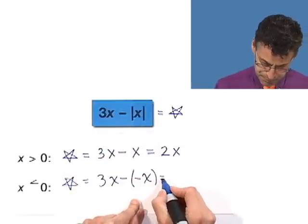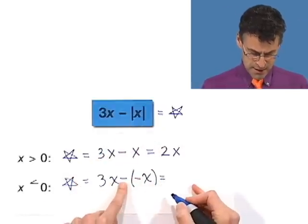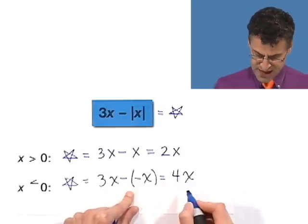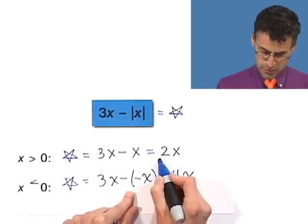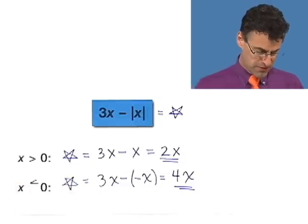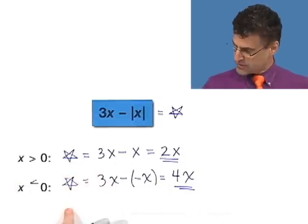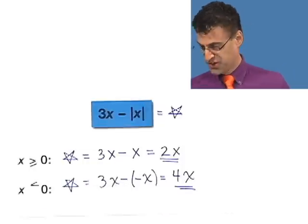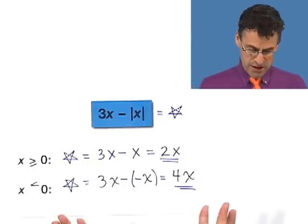Now we have to simplify: 3x minus negative x is the same thing as 3x plus x, which is 4x. So the answer is 4x when x is less than zero, and the answer was 2x when x is greater than or equal to zero. The important thing is that just because you see a variable x, it doesn't necessarily mean that it's positive — a negative in front of a variable might actually make the number positive.